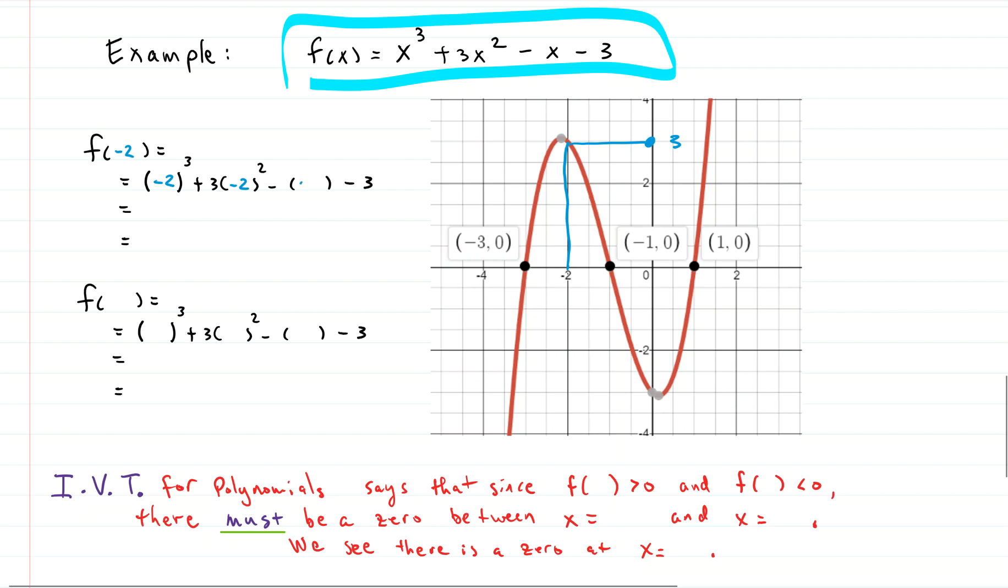Put in negative 2 for all of the inputs. This gives us negative 8. This gives us positive 12, positive 2, and negative 3. And yep, that does give us 3. And 3 is, by the way, bigger than zero, right? We're above the x axis. Okay. So the sign is positive. That's what we get from there.